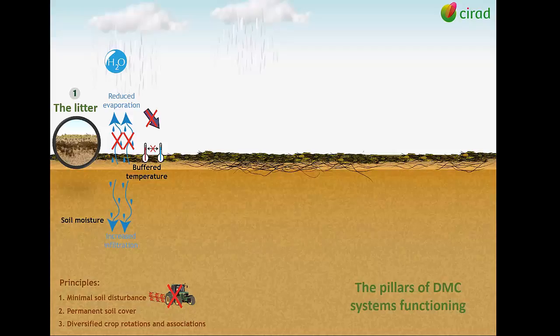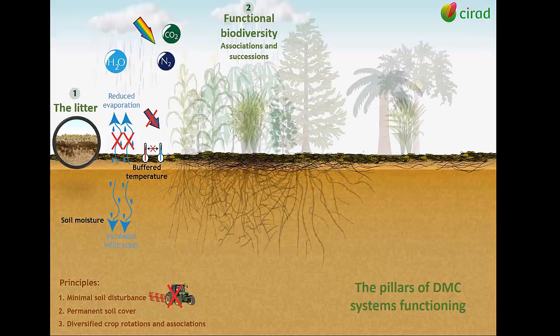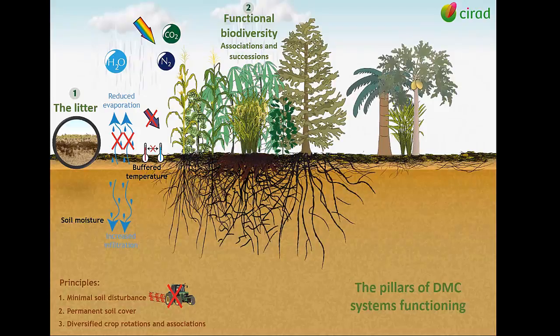Crop associations and successions enable to make use of plant functional diversity, which is the second pillar of DMC systems. Thanks to plant complementarity for resources, the system optimizes the production of biomass above ground as well as below ground, which allows the continuous return of quality plant material to the soil litter.